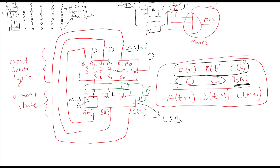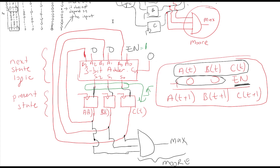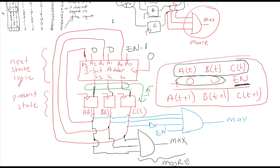For the Moore output, I take a, b, and c and AND them together — this gives the max Moore output. For the Mealy output, the output is 1 when the present state is 6 and there is an enable: I invert the c output and take b and a directly to get state 6, then AND this with the enable input to produce the max Mealy output.